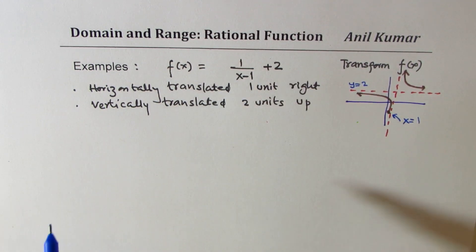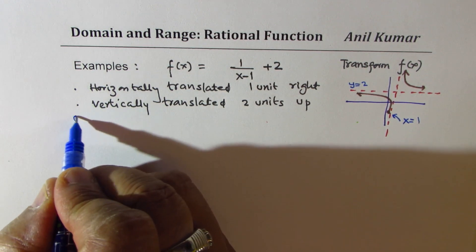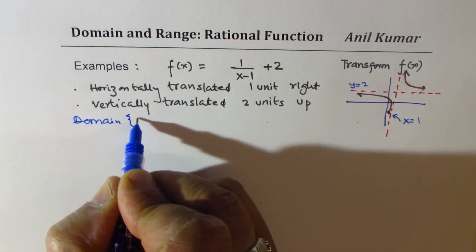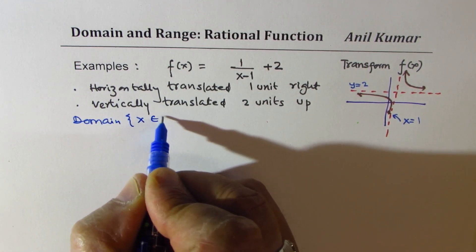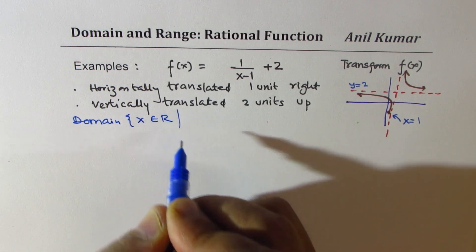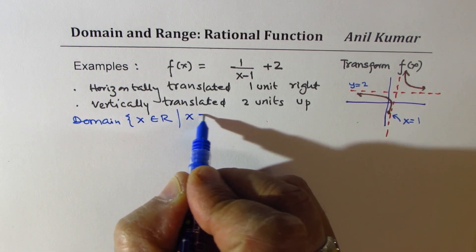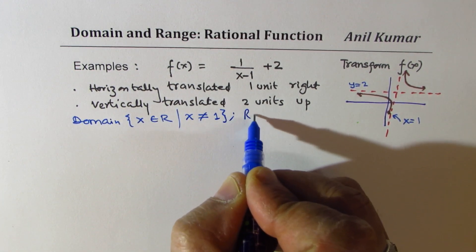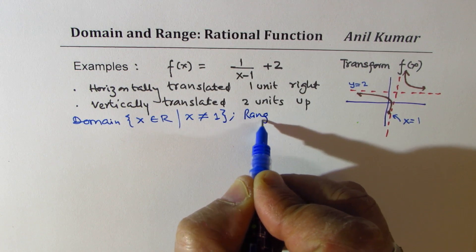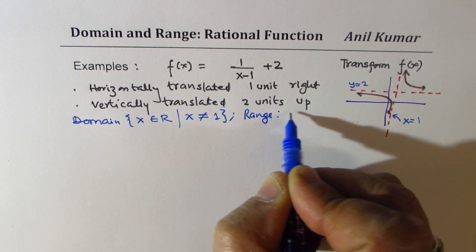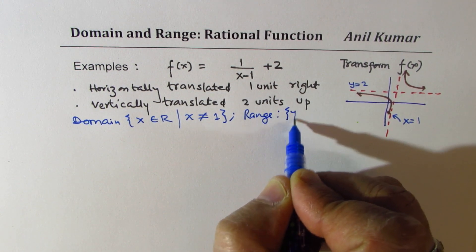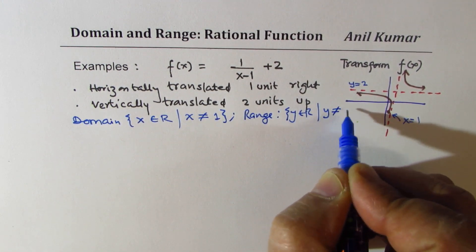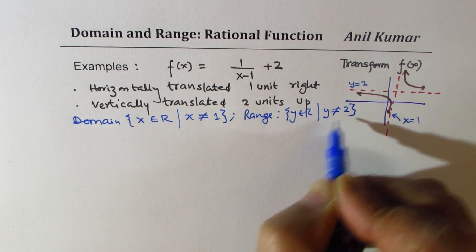In this particular case, the domain is x belongs to real numbers where x is not equal to 1, and the range is y belongs to real numbers where y is not equal to 2. So you can see that from these translations or transformations, we can actually find domain and range for such functions.